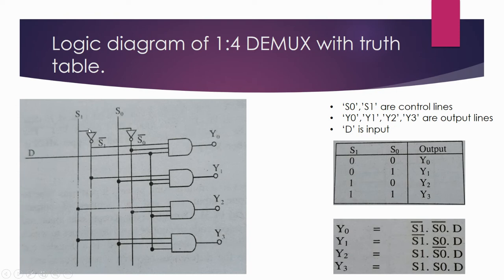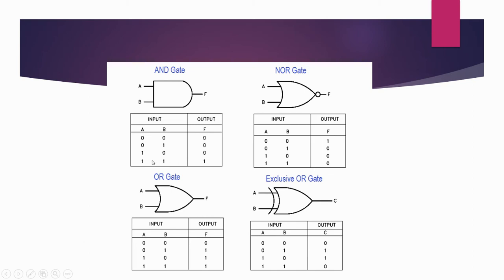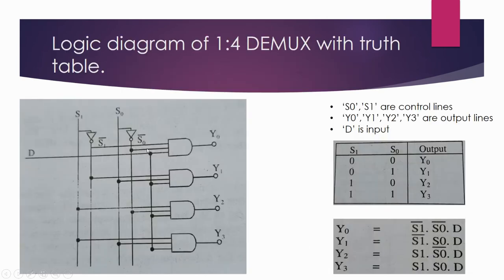As we know the working of an inverter — it inverts the value. If 0 is input, it is converted to 1. So s1 bar equals 1. Same for s0: 0 passes through the inverter, 0 becomes 1, so s0 bar equals 1. This 1 is given to the first AND gate. When both inputs of an AND gate are 1, the output is 1, so whatever value is present at D will be passed through to Y0.